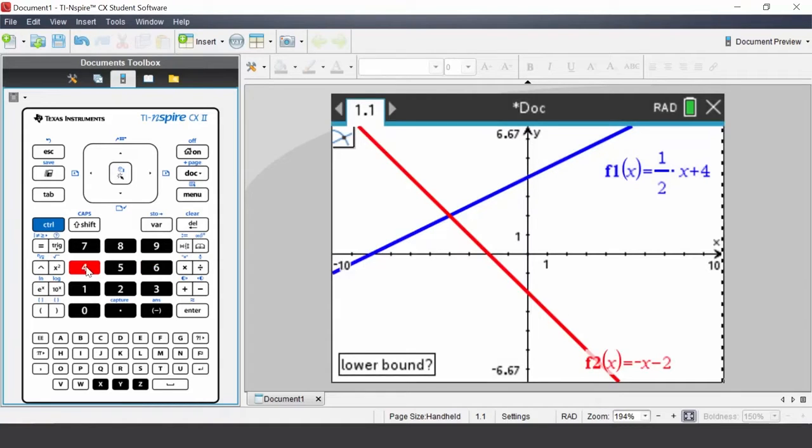I will show you two methods to determine the point of intersection. Method 1. The calculator requires an upper bound and a lower bound. On the calculator, use the touchpad, which is like a mouse, to have the lower bound be less than negative 4, as the point of intersection looks like about X is negative 4. Press the middle of the touchpad to set the lower bound.